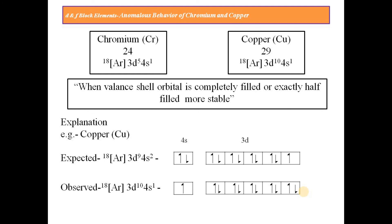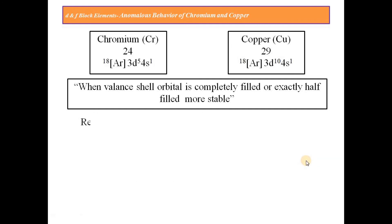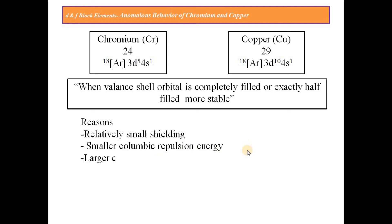The reasons behind greater stability when orbitals are exactly half-filled or completely filled include: relatively small shielding, smaller Coulombic repulsion energy, and larger exchange energy. That is why both Chromium and Copper behave exceptionally — their electronic configurations differ from those of other first transition series elements.